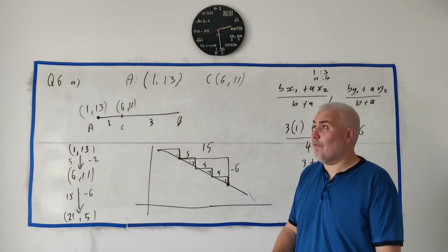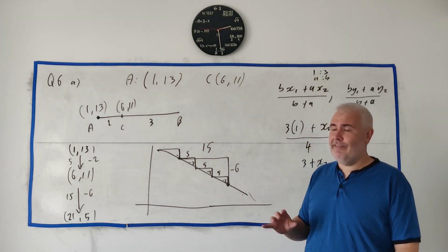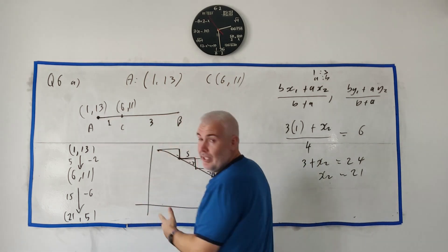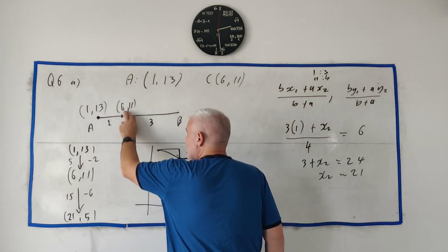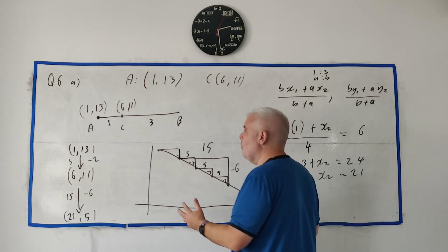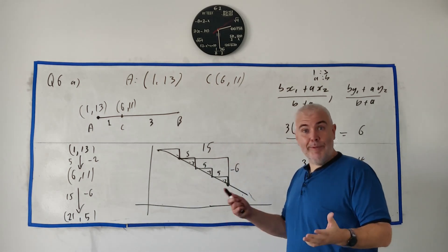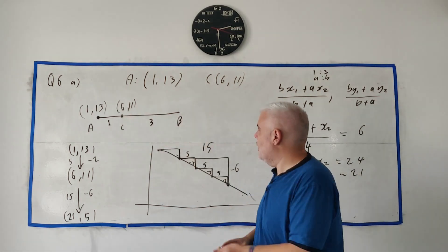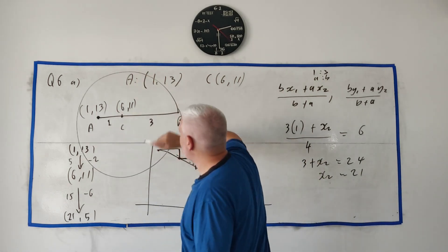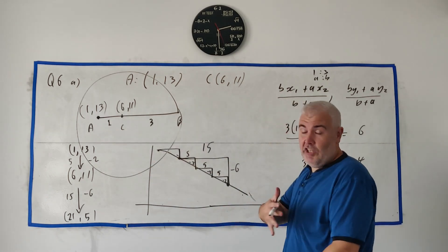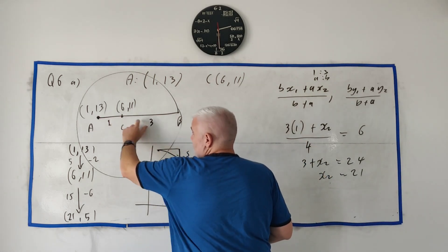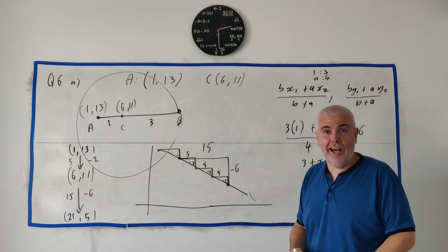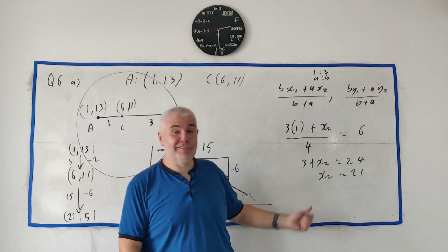The third and really messy way — which a small number of students might try — is to use the distance formula between the two known points, multiply that distance by 3, then set up an equation. The problem is you end up with the equation of a circle around point C, and you'd then need to find the line equation and intersect it with the circle. It's not impossibly long, but much slower than the other methods.